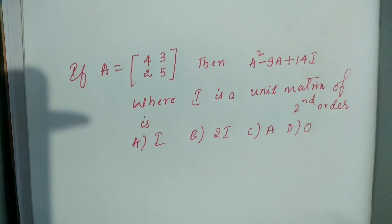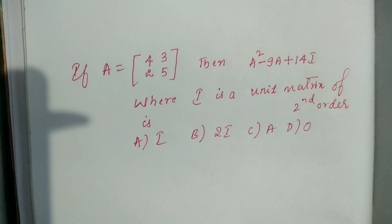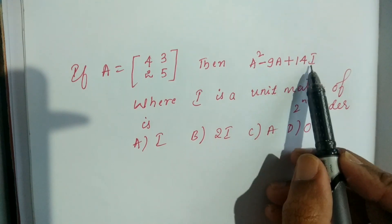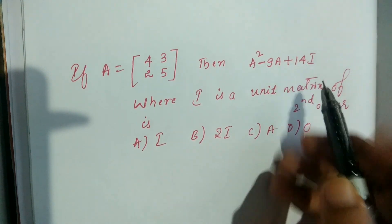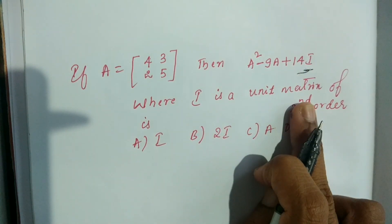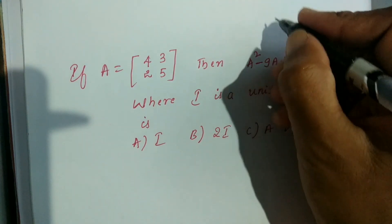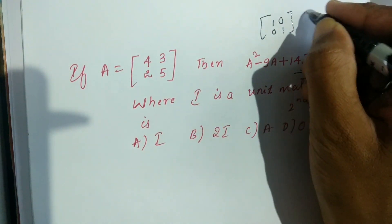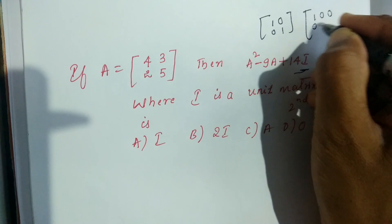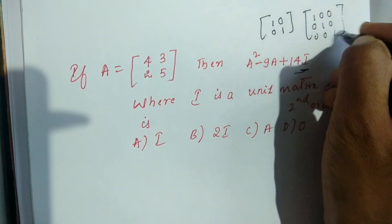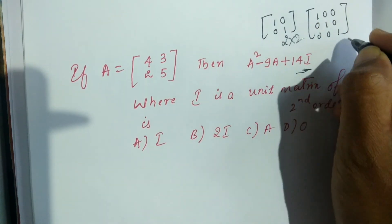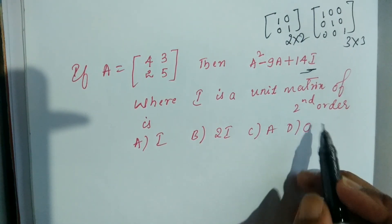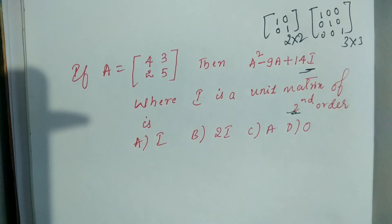The expression is A² − 9A + 14I, where I is the identity matrix or unit matrix of order 2 — that is [1, 0; 0, 1], the 2×2 identity matrix.